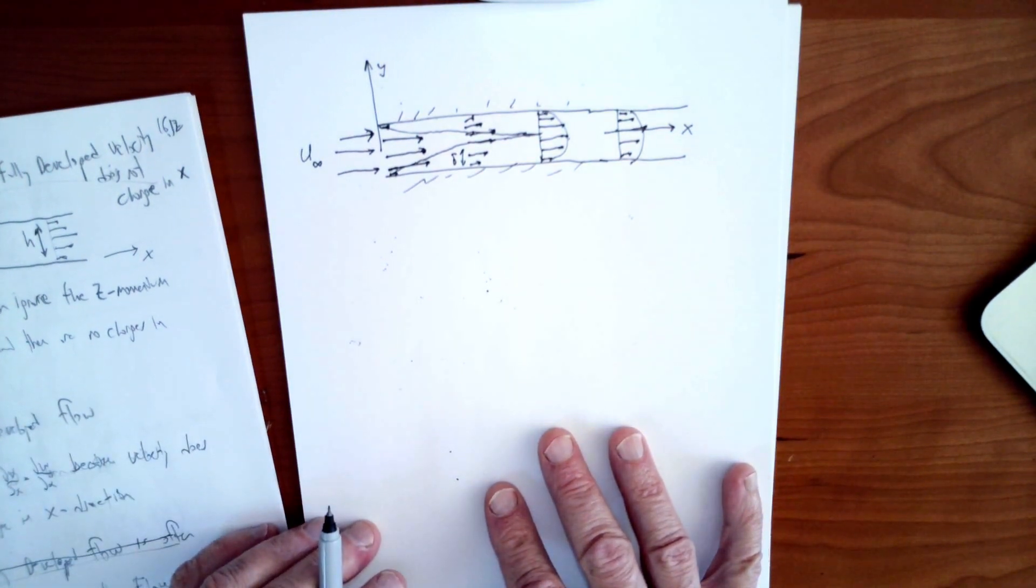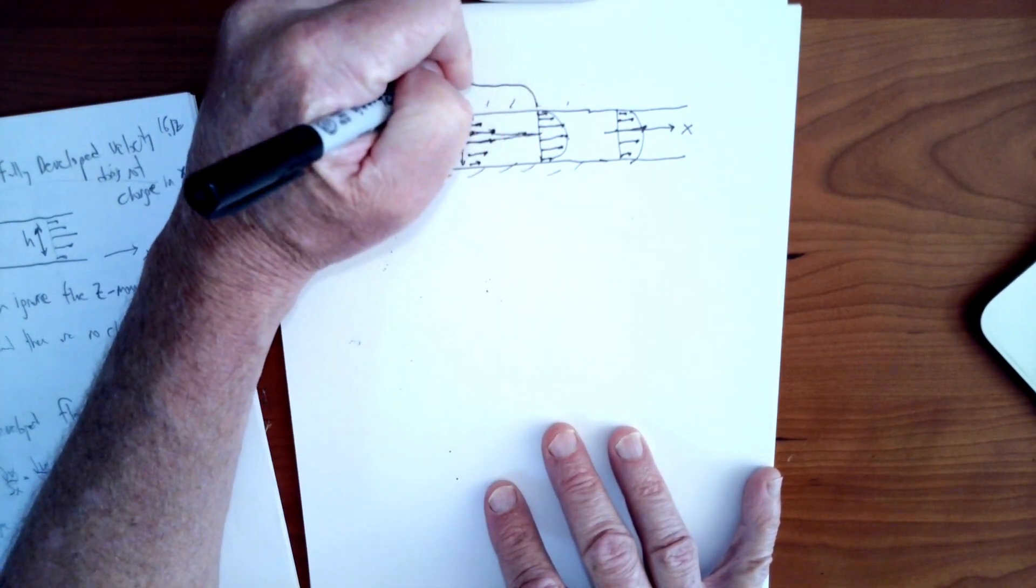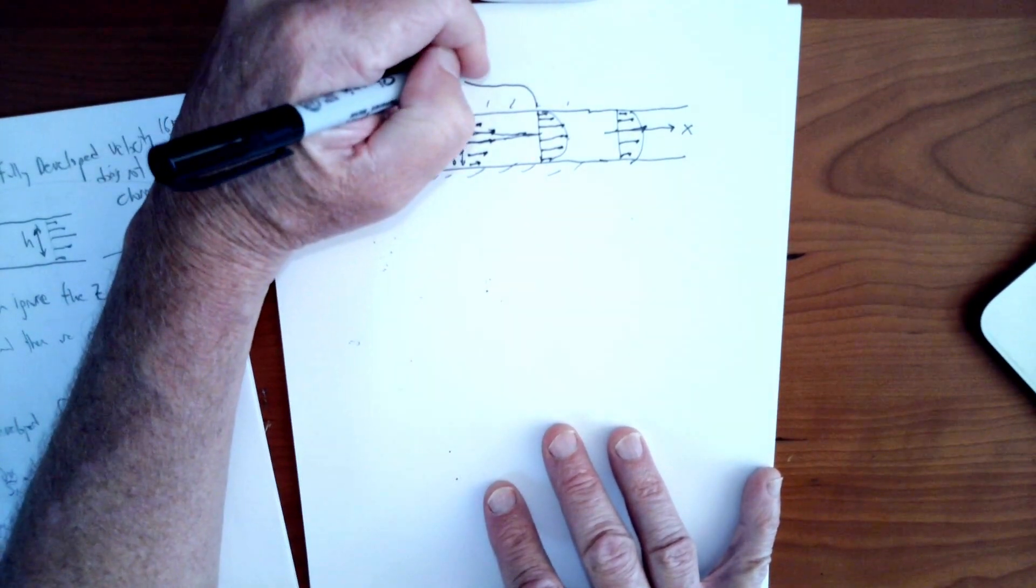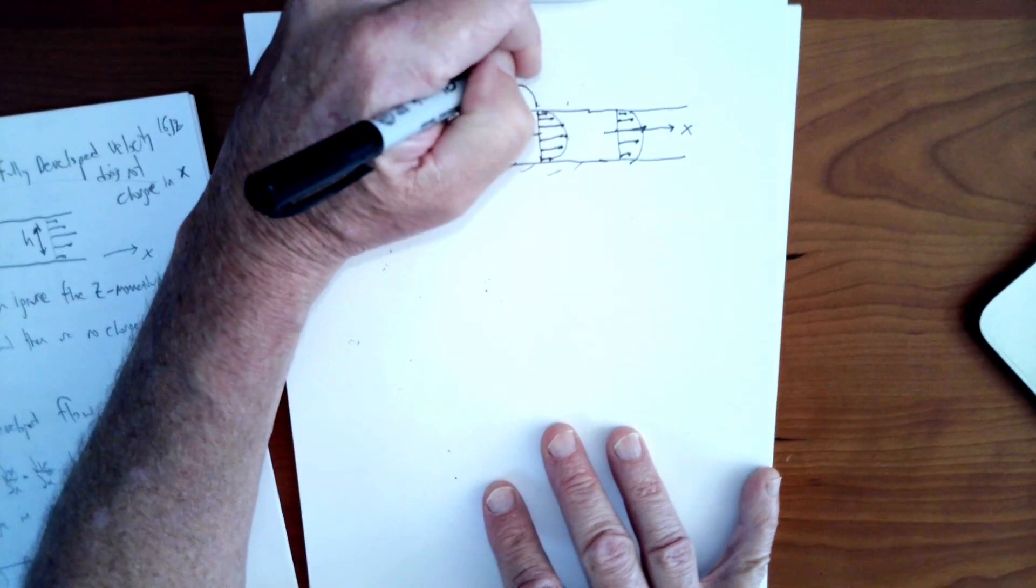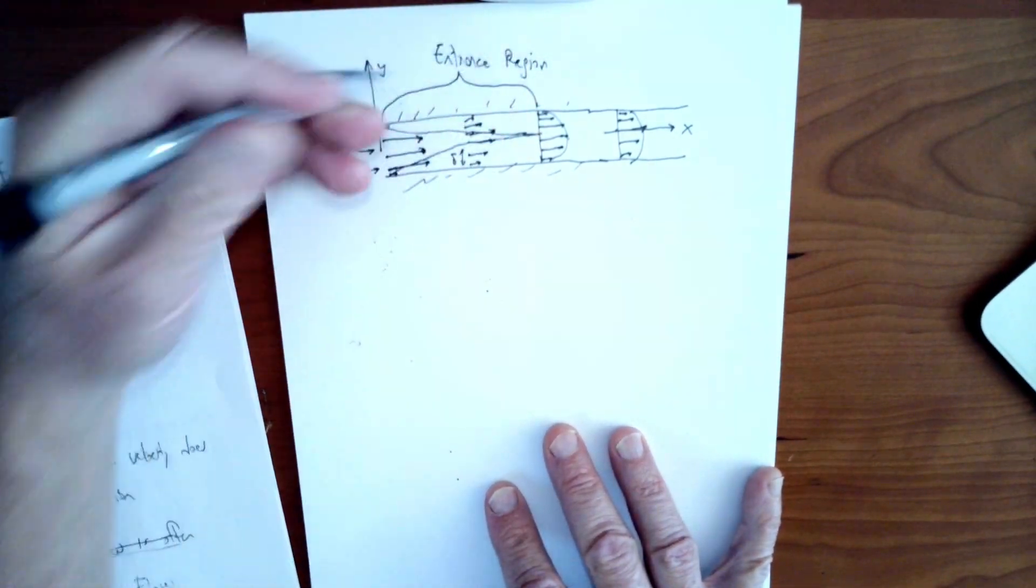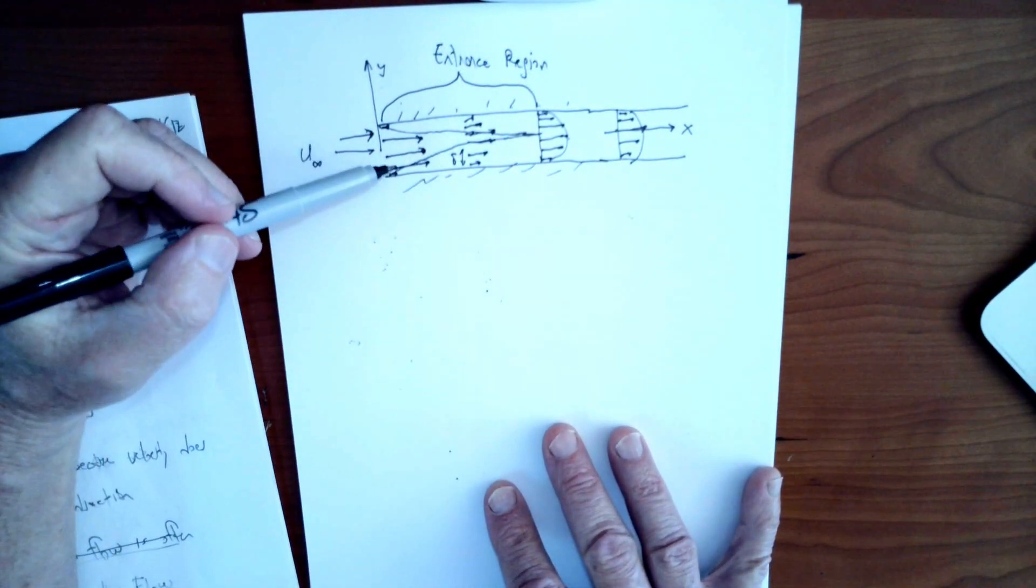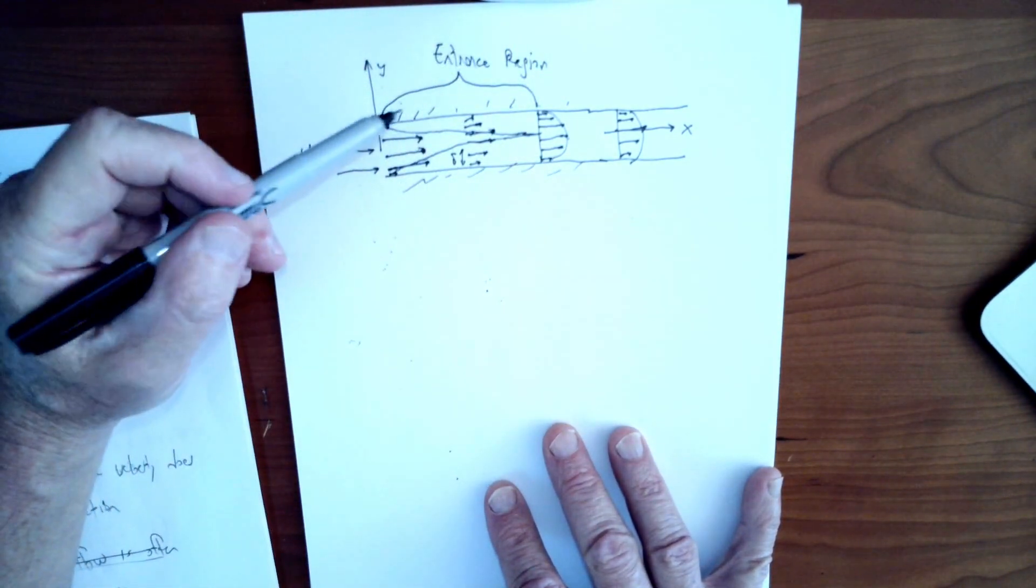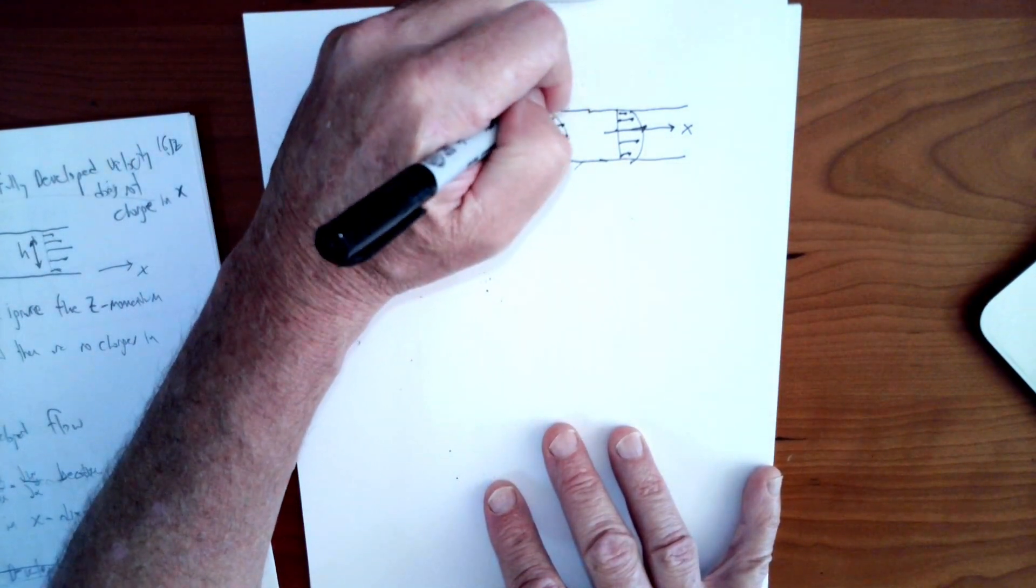We divide the flow of this type of channel flow into two regions. We have the entrance region, which is the beginning region where the flow is changing as it flows into the pipe, starting out pretty uniform. Then those viscosity effects are increasingly reaching into the flow. And then we have what's called the fully developed region, where the viscosity effects have completely reached across the flow field.